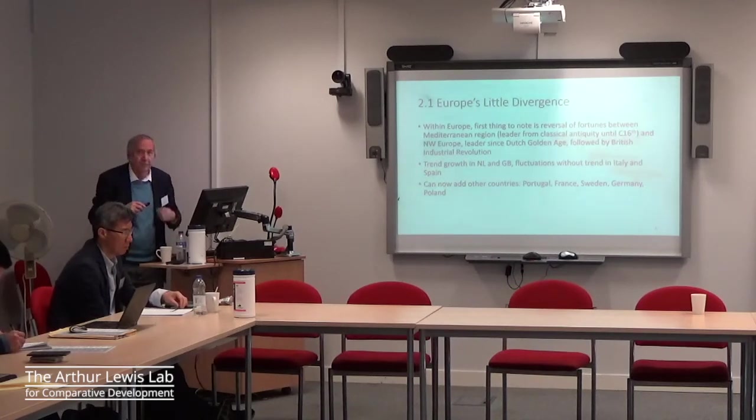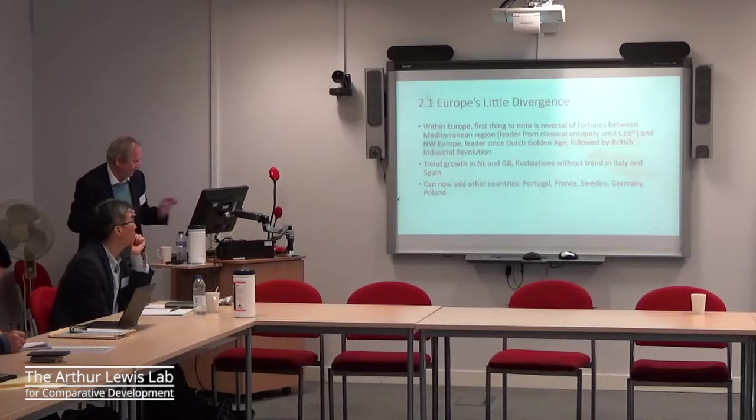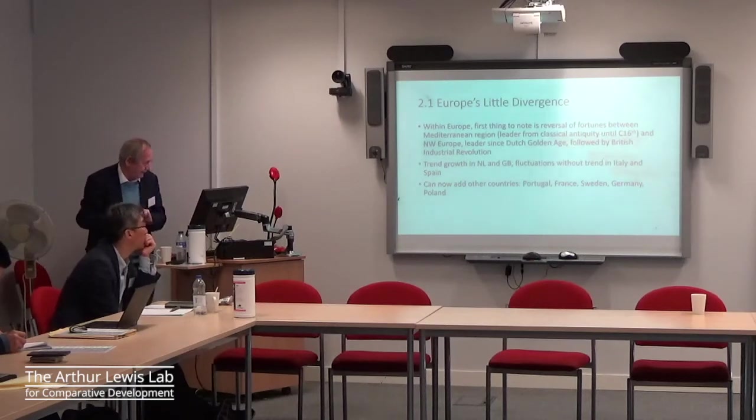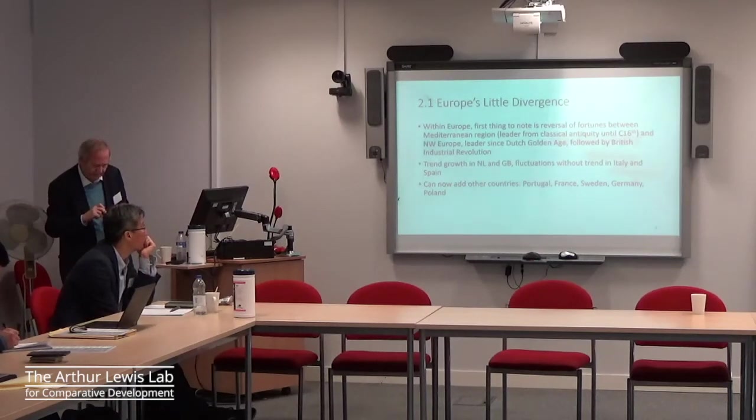You'll see trend growth in Northwest Europe — Britain and the Netherlands. You'll see fluctuations but without trend in Italy and Spain. This is what Jack would call efflorescences: you have growth, but it doesn't continue; in fact it's followed by negative growth, so you never get any further in the development process. We can now add other countries: Portugal, France, Sweden, Germany, and Poland.